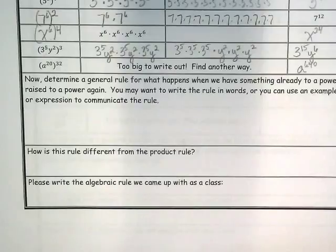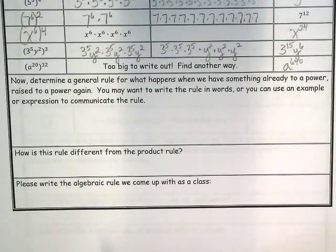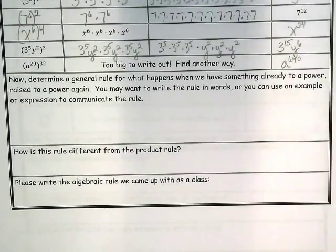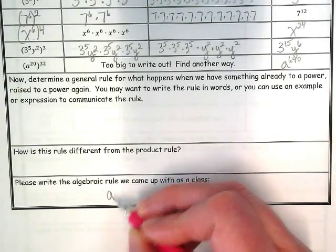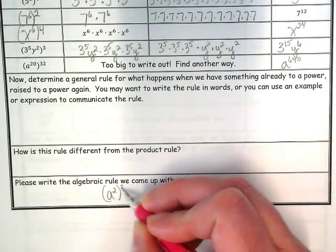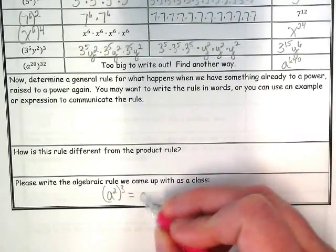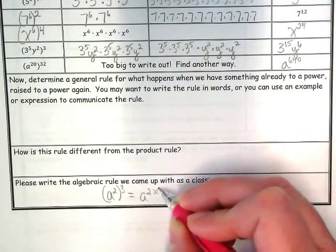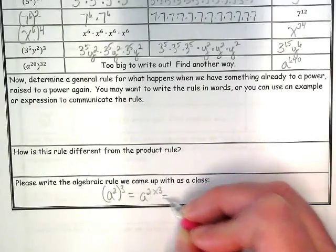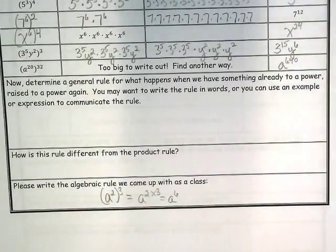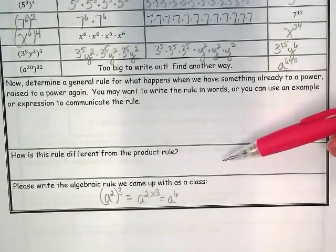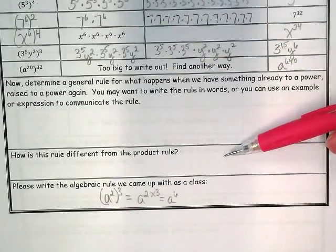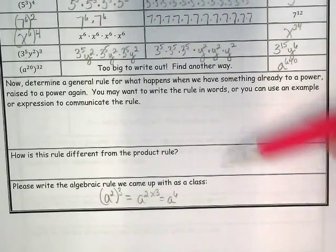Okay, write a general rule. I want you to write your own rule here. And I also want you to go back and compare this to the product rule that we did yesterday. How is this rule different from the product rule?